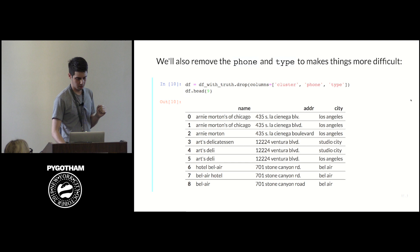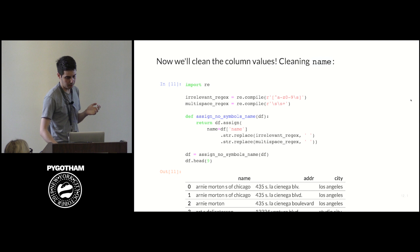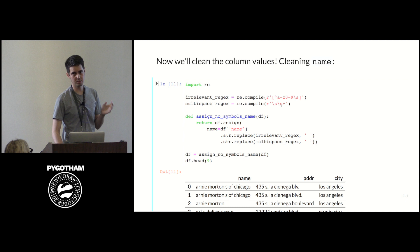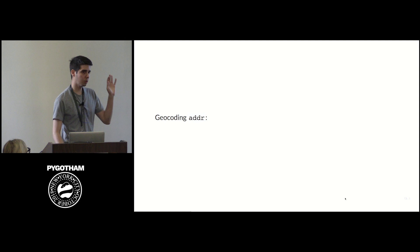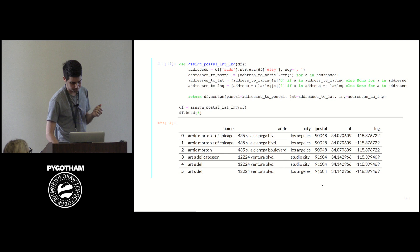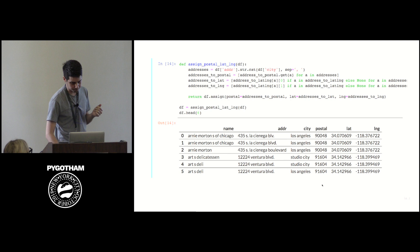We'll clean names by keeping only alphanumeric characters using a regex, and also remove multi-spaces since only single spaces matter. We're left with slightly cleaned names. We'll also geocode all the addresses — I did this beforehand because it takes some time. We geocoded all addresses and got the postal code, latitude, and longitude for each record. Here I used the Google Geocoder, but you can build your own geocoder — there are tools for that.